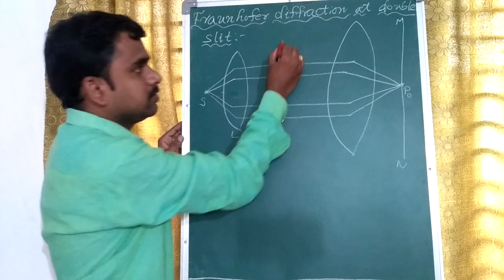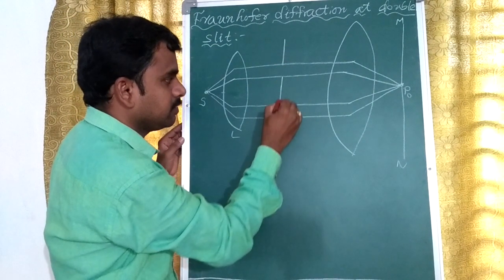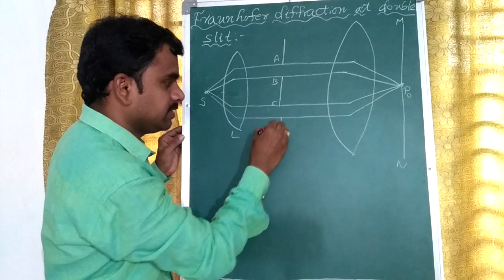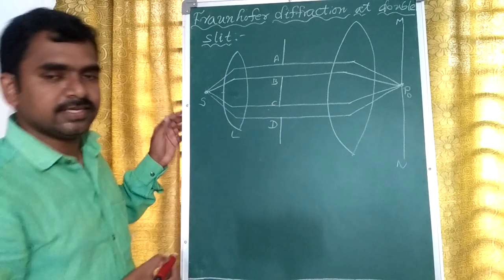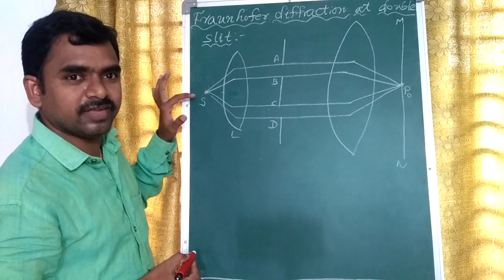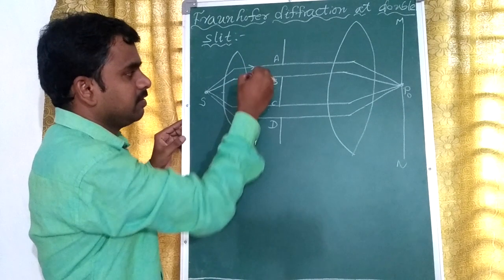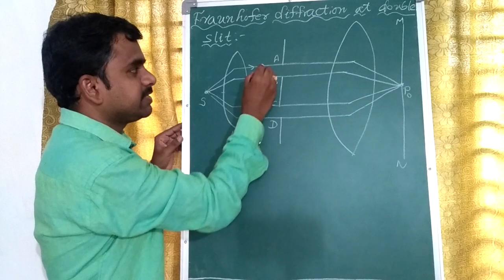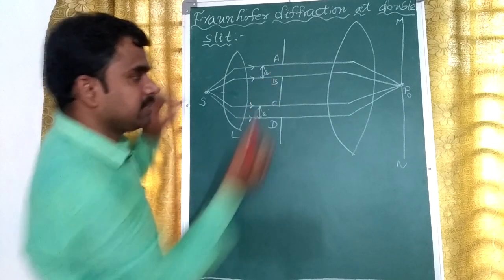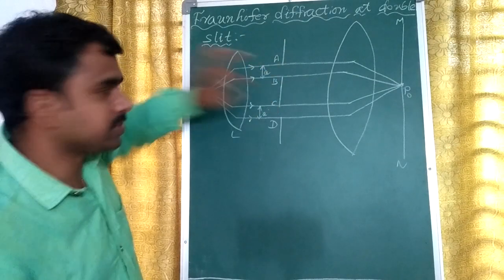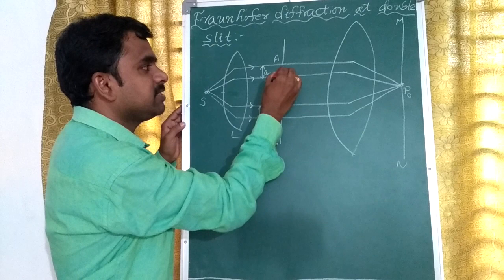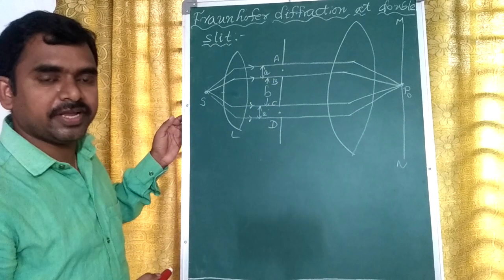We have to take two slits in the propagation direction. AB is the first slit and CD is the second slit. The source of light emits light waves having wavelength lambda. The width of each slit is small 'a', and the separation between the two slits is small 'b'. The centers of the two successive slits are called corresponding points.